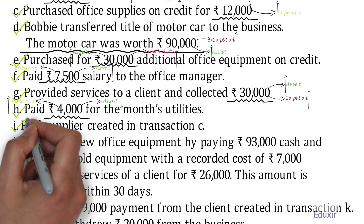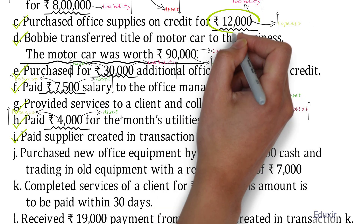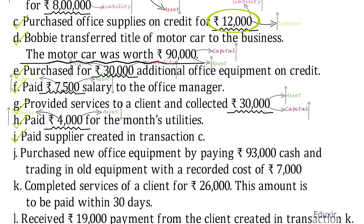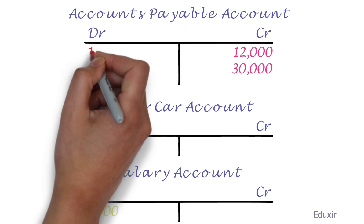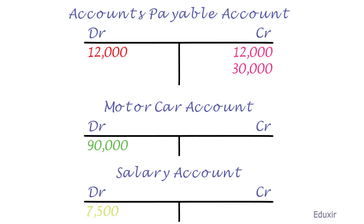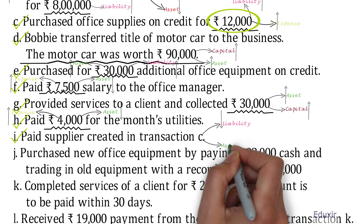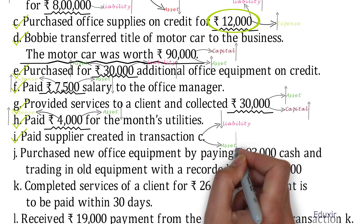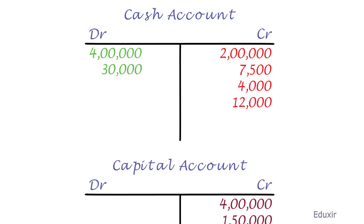Let us now deal with transaction I. We are paying out 12,000 rupees of liability that was created in transaction C, so there is a decrease in the liability. The rule to record the decrease in liability is to debit the liabilities account, so we debit 12,000 rupees from the accounts payable account. As this liability is discharged by paying in cash, this reduces the cash account. The rule to record a decrease in the cash asset is to credit the cash account, so we credit 12,000 rupees to the cash account. That covers transaction I.